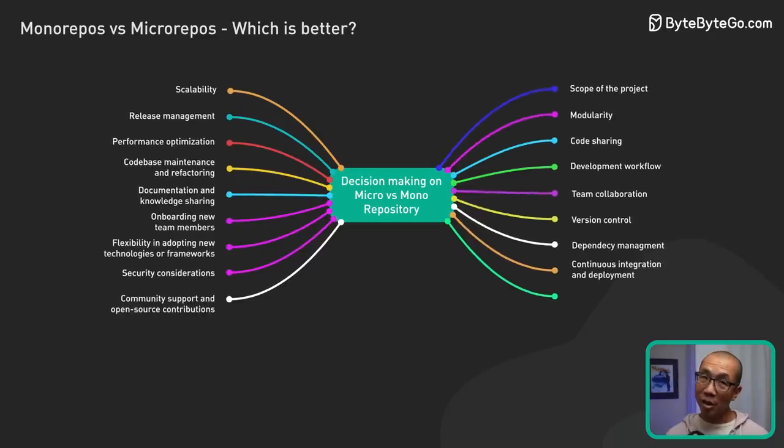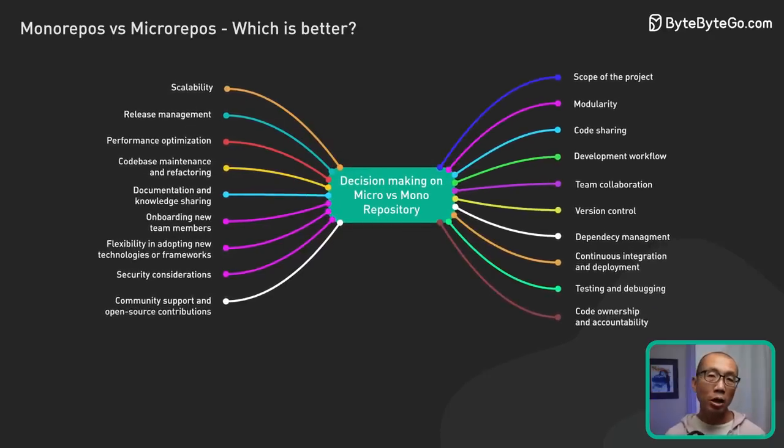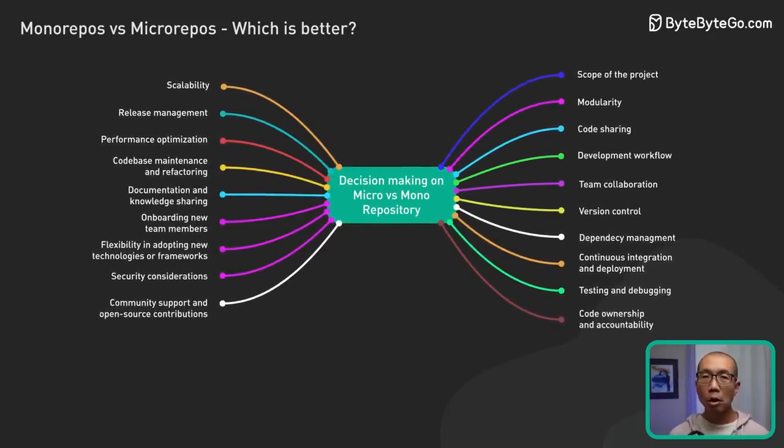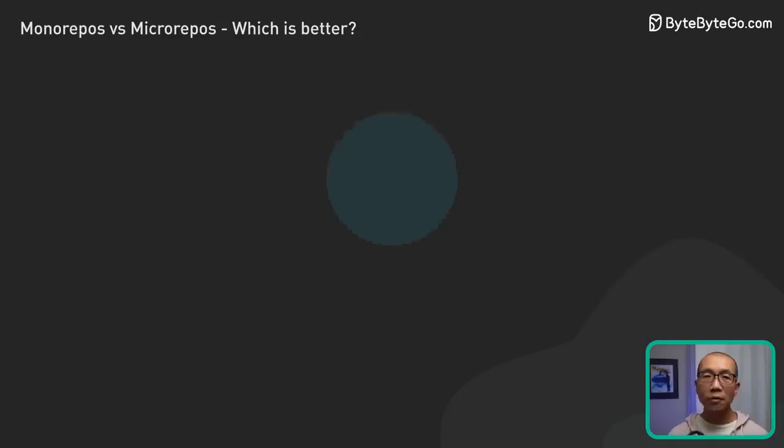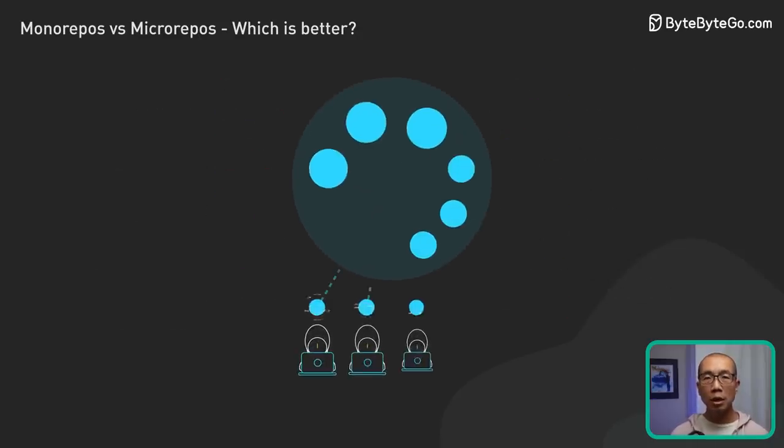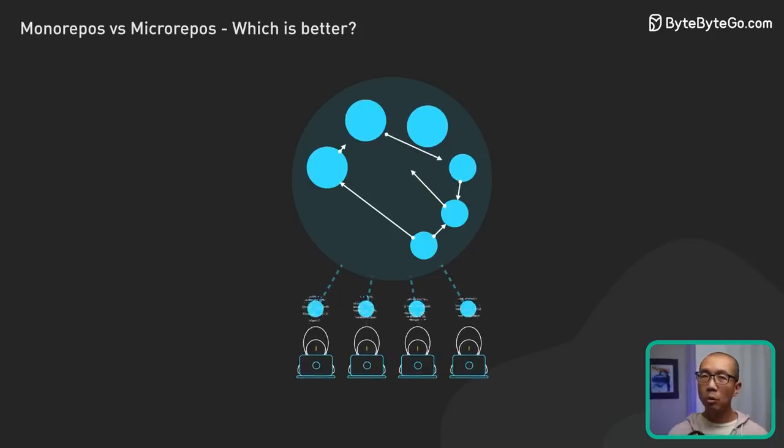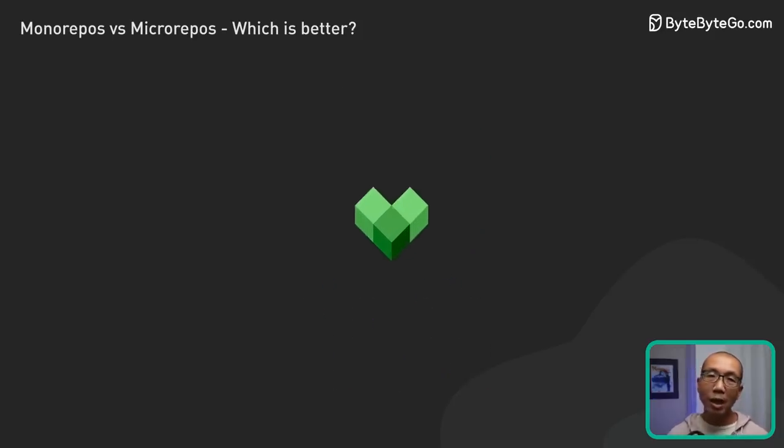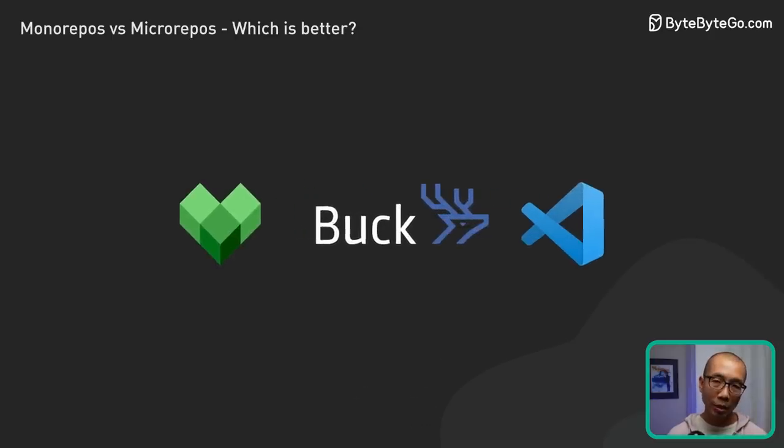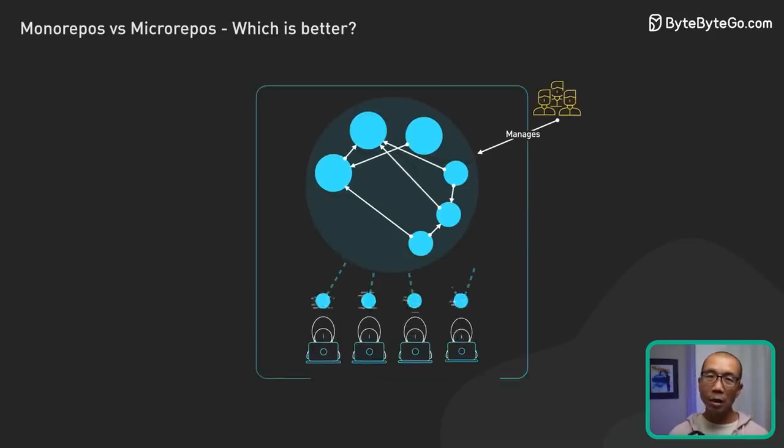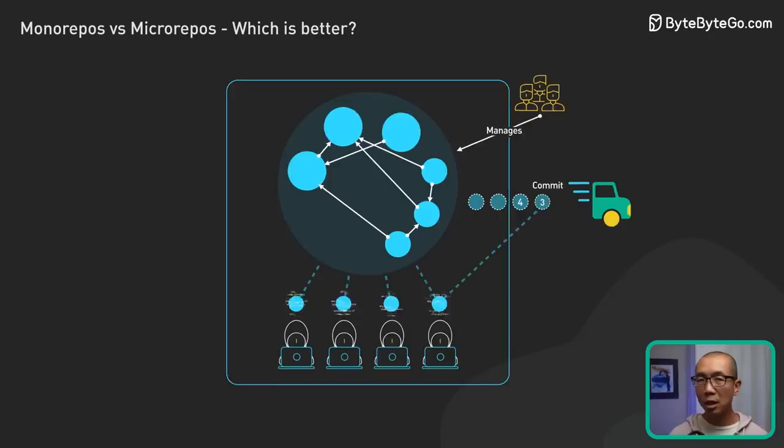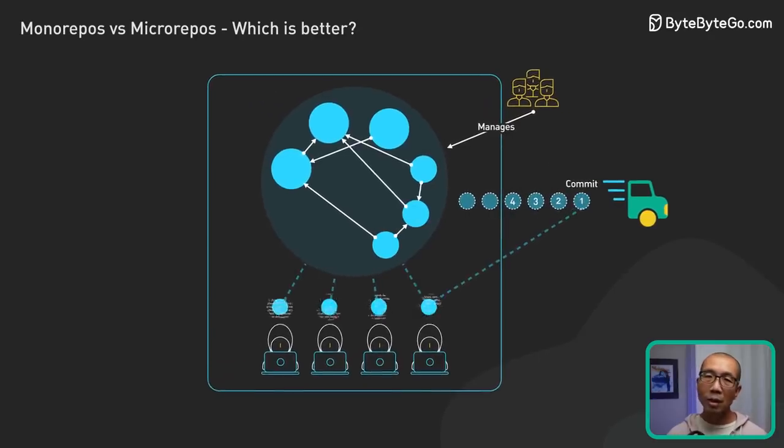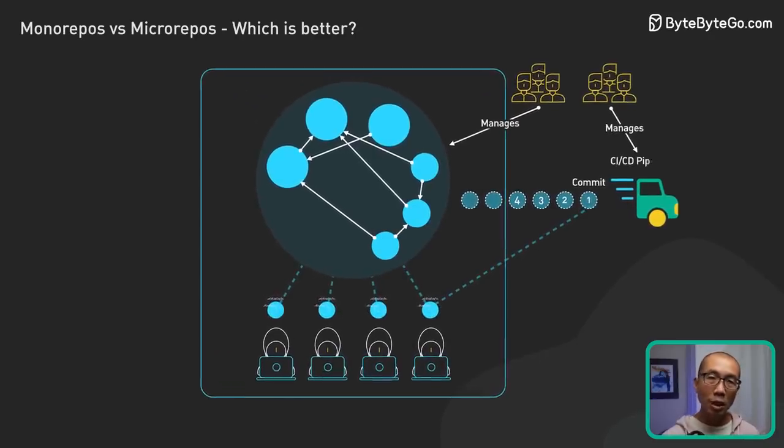Monorepos bring consistency, make cross-project changes smoother, and promote code reuse. They are a great fit if you have large teams working on interconnected projects, where collaboration and consistency are key. But remember, they require careful upfront planning and tooling. Unmanaged, they can affect the performance of the CI-CD pipelines and offer less flexibility to individual teams.